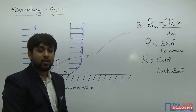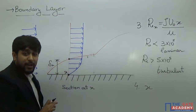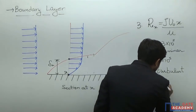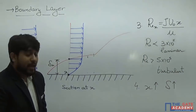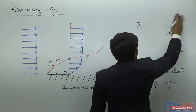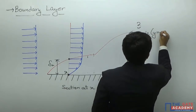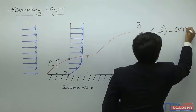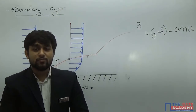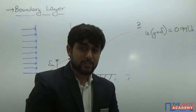We also saw that as the value of x increases, the corresponding distance from the plate where the velocity becomes almost equal to the free stream velocity also increases — that is, with increase in x the value of delta also increases. Mathematically, we can define delta as that value of y where the velocity is almost equal to the free stream velocity. These are some important features of boundary layer. In the next video we will look at the important physical quantities related to boundary layer and how to calculate those quantities.